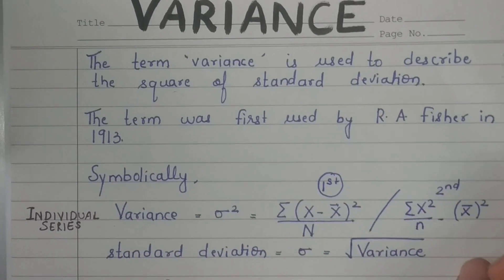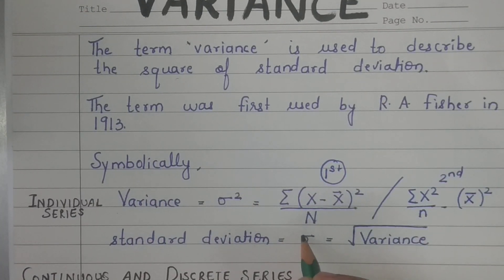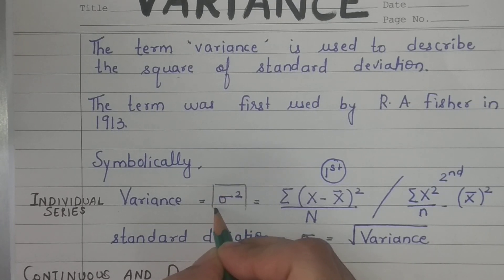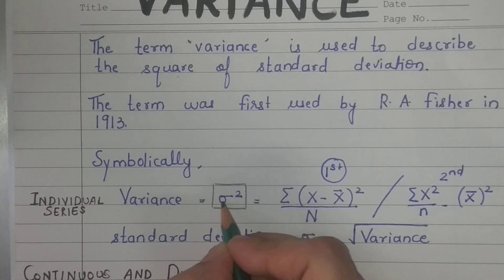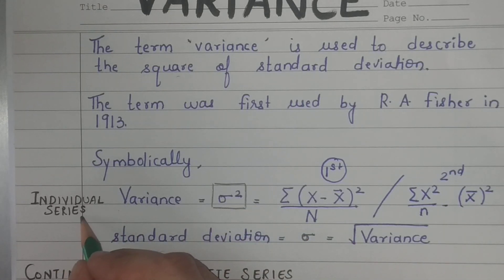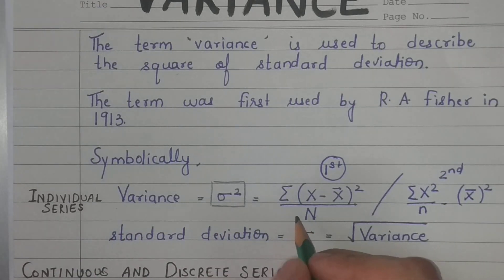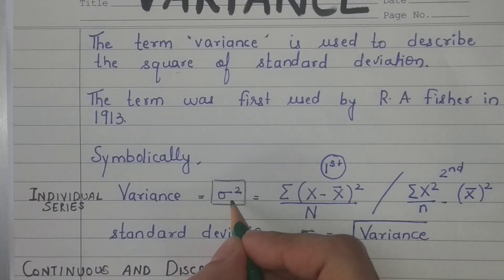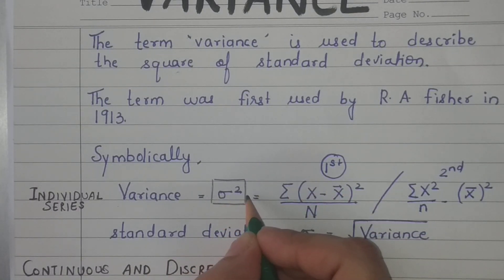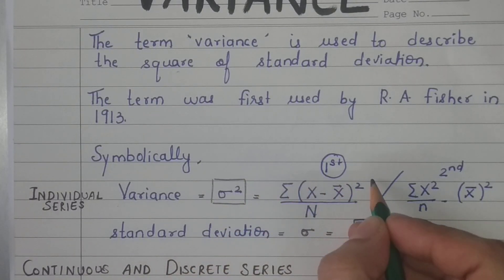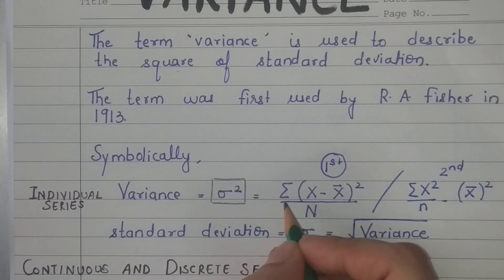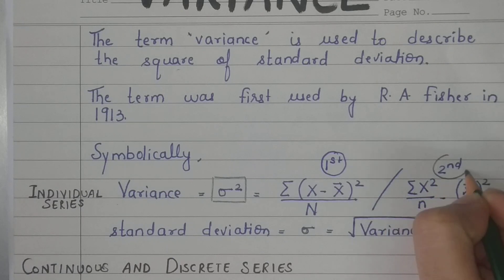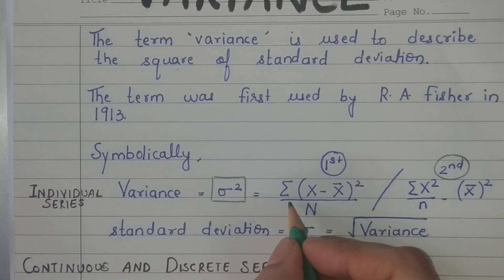Symbolically, if standard deviation is represented by sigma, then variance will be the square of standard deviation, symbolized by sigma squared. For individual series, the formula for variance — unlike standard deviation, there is no square root since variance is the square — so the square root is removed and the rest of the formula remains the same.